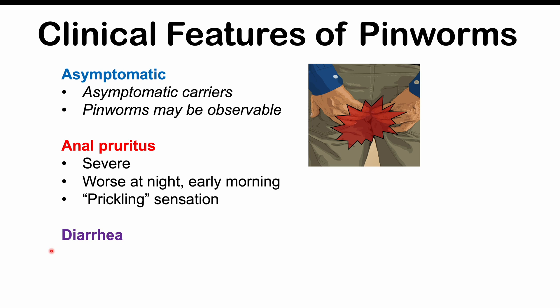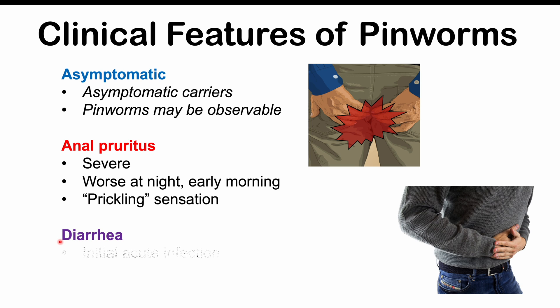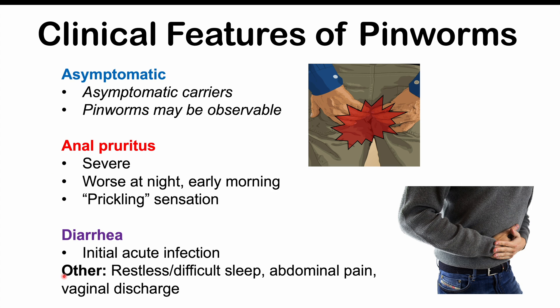Other symptoms of pinworm infection include diarrhea, which usually occurs during the initial or acute stage of infection. Restless or difficult sleep can occur due to the irritation of the anal region. Abdominal pain can also occur. Especially in children, there can be passage of pinworms to the vaginal area, leading to a vaginal infection and vaginal discharge.